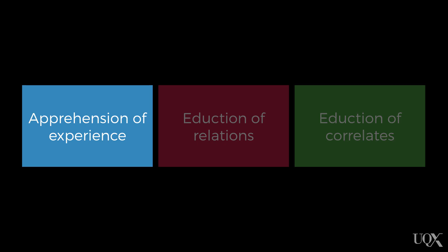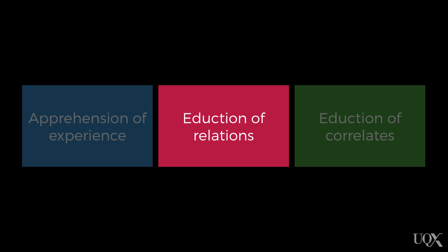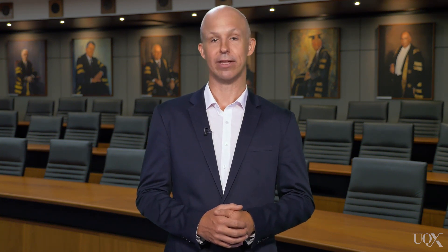What we've done here is what Spearman would have suggested is influenced by the g-factor. We could look at these shapes and figure out that there are actually two distinct shapes that we have to compare — he called this apprehension of experience. We were able to compare them and look at what was consistent across the shapes and work out what the rule is, which he referred to as adduction of relations. We were then able to apply the rule to all of them and figure out which was the odd one out — this final step is called adduction of correlates.